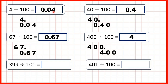Notice our answers so far: when we had four ones and divided by a hundred we got four hundredths; when we had four tenths and divided by a hundred we got four hundredths; and when we had four hundredths and divided by a hundred we got four ones. That's because dividing by a hundred is like dividing by ten and then dividing by ten again, so the digits move two place values to the right.